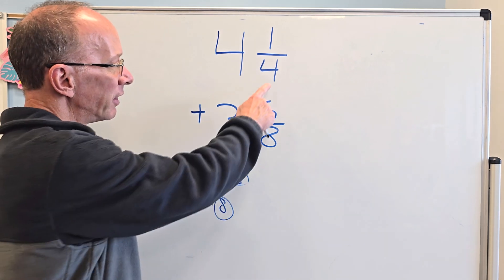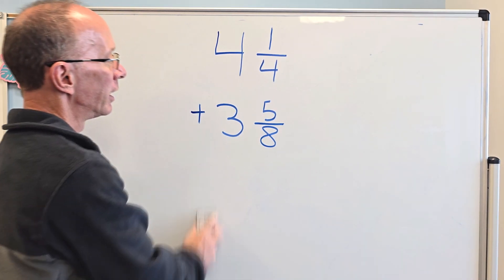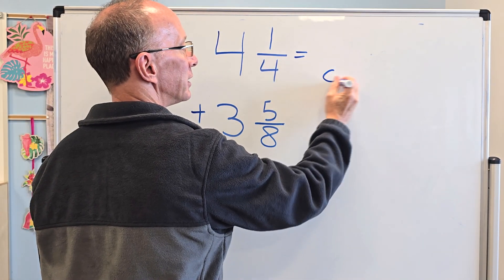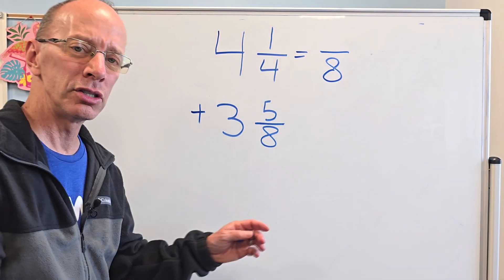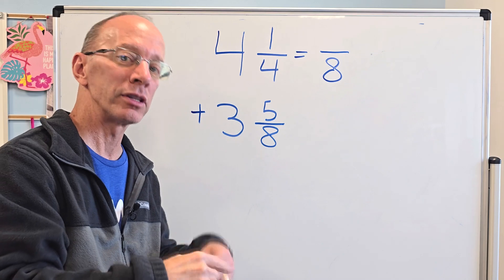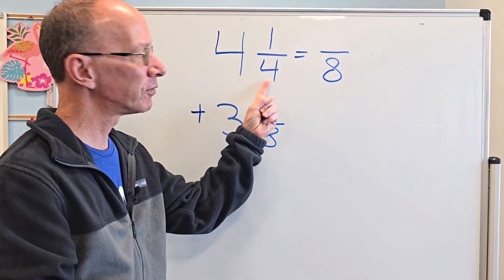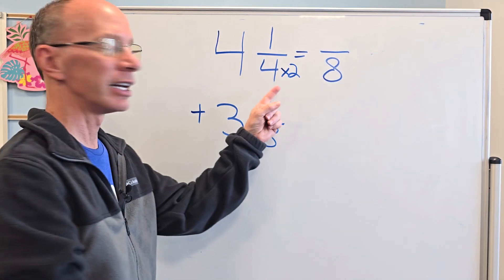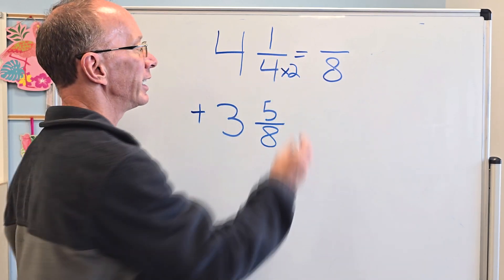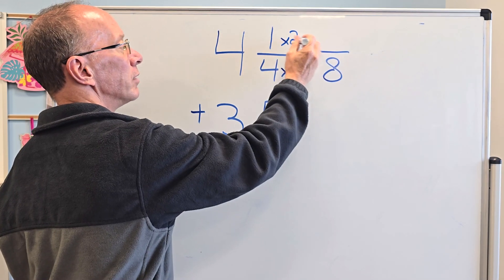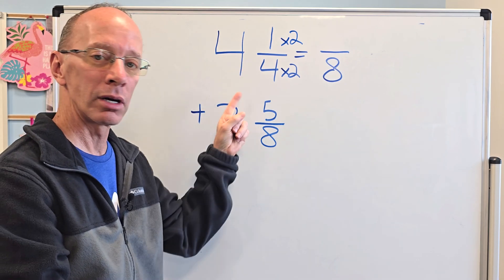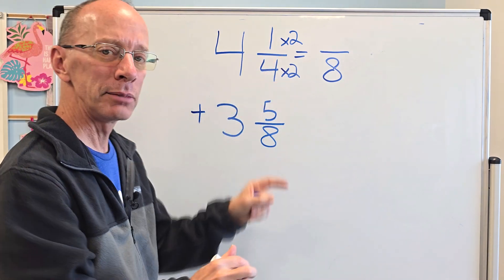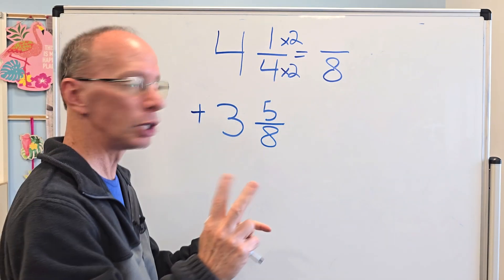So I'm going to change this right here to an 8. I'm going to put my equal sign right here and then put 8. And remember, whatever you do with the denominator, you have to do the same thing with the numerator. So what times 4 equals 8? 2. So I take times 2 here. And again, whatever I do here, I need to do the exact same thing here — so times 2 right there. I'm not messing with the whole number right now, we're just working with the fraction. So 1 times 2 equals 2 right here.